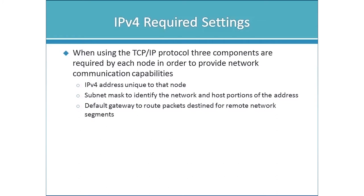You can think of the IP address like a house number and street name. If I live at 123 Oak Street and there's also 123 Maple Street, the postal worker has no problem delivering mail because there are two parts to the address. Similarly, a network address has a network ID — the street name — and a host ID — the house number. The subnet mask is the component that differentiates between those two parts.